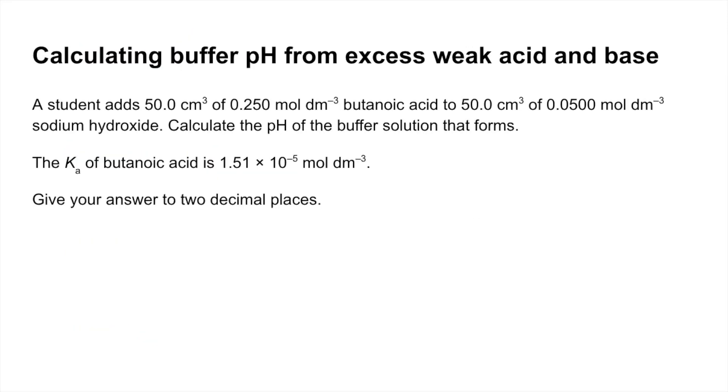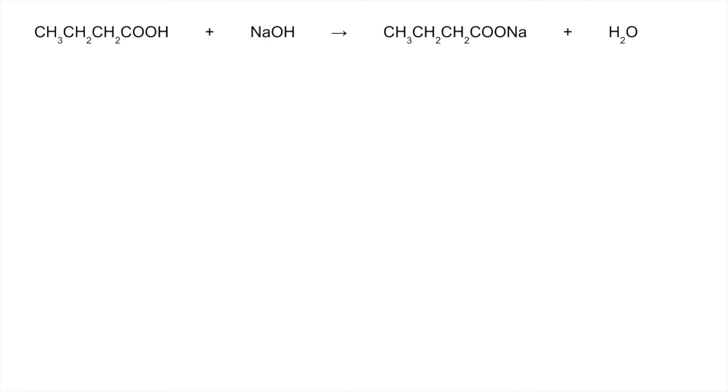Now for the third one. I'm starting with the equation for the reaction between butanoic acid and sodium hydroxide. That's going to make sodium butanoate and water. First we're going to calculate the moles of the butanoic acid and sodium hydroxide used. That's concentration times volume: 0.0125 moles of acid and 0.0025 moles of sodium hydroxide.